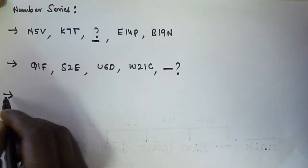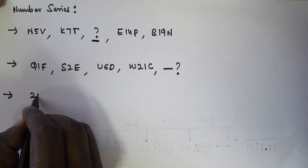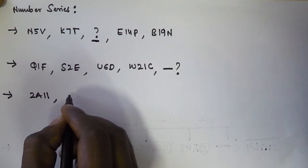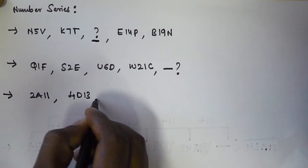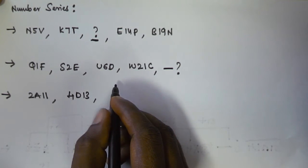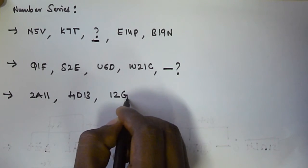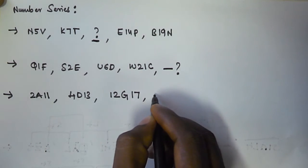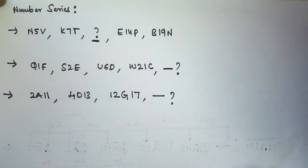The third problem we have in this series is: 2A11, 4B13, 12G17, and the next term we have to find.